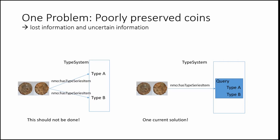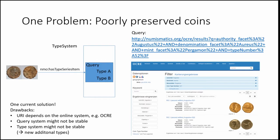One interesting solution that some Polish colleagues have come up with is that they enter as the value a SPARQL query which, when run against Online Coins of the Roman Empire, will give the results they want. For example, the result of the SPARQL query produces just these two entries, and they put that query into the field linking the identification of the coin. This looks quite elegant, but there are problems: it relies on the Online Coins of the Roman Empire system staying stable, and it relies on the query language used by OCRE not changing.